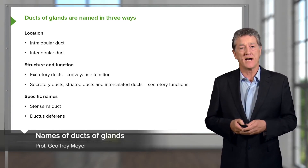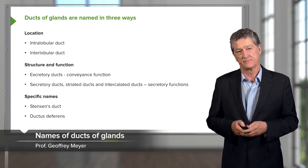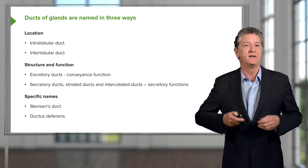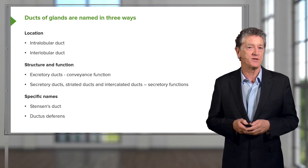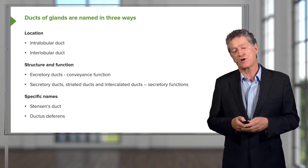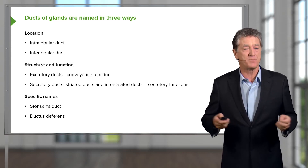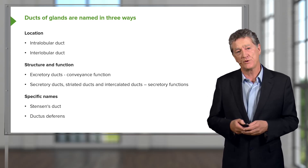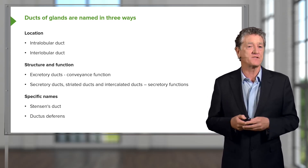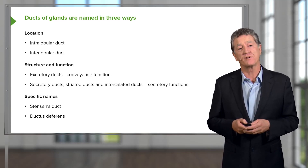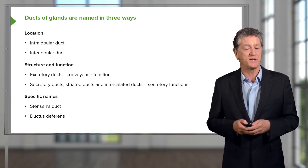Let's look at how ducts are named in glands. They can be named in a number of different ways. Firstly, you can name them according to the location where you see these ducts. A large compound gland is divided by connective tissue into large lobes and then smaller lobules. Histologically, you don't often see sections through ducts that are in between the different lobes — these are called interlobar ducts.